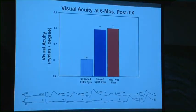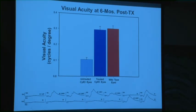For GNAT2, I'm showing one outcome: visual acuity. Untreated eyes, wild-type eyes in red, and the treated eye in blue — you can see there's been an improvement to essentially wild-type mouse visual acuity, with a very good p-value.